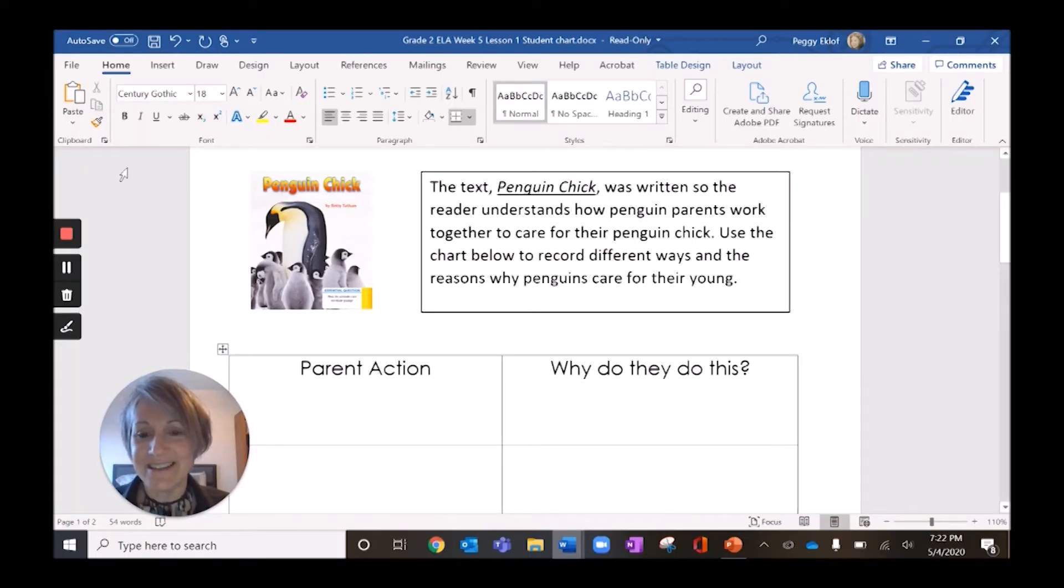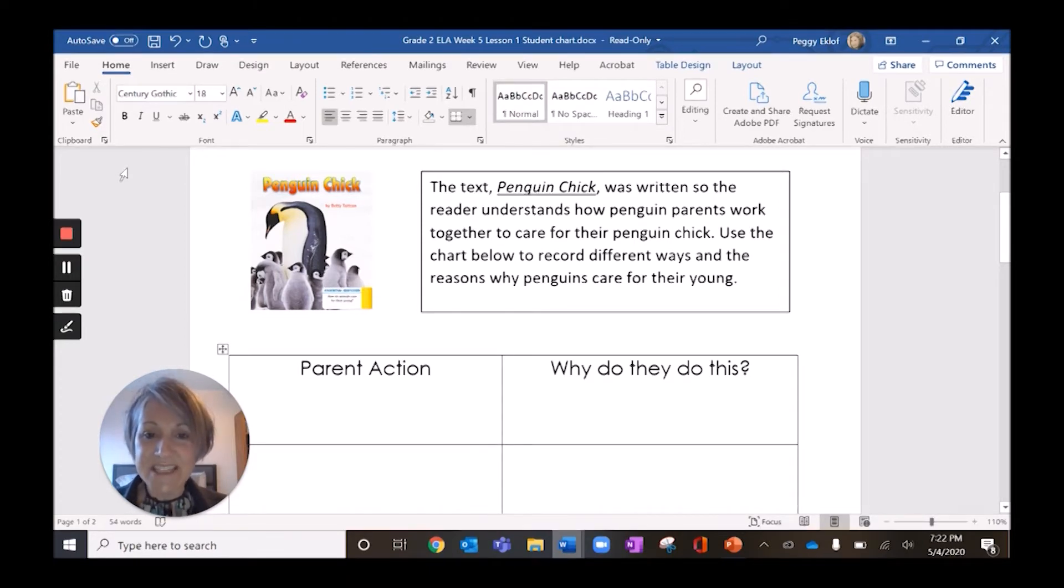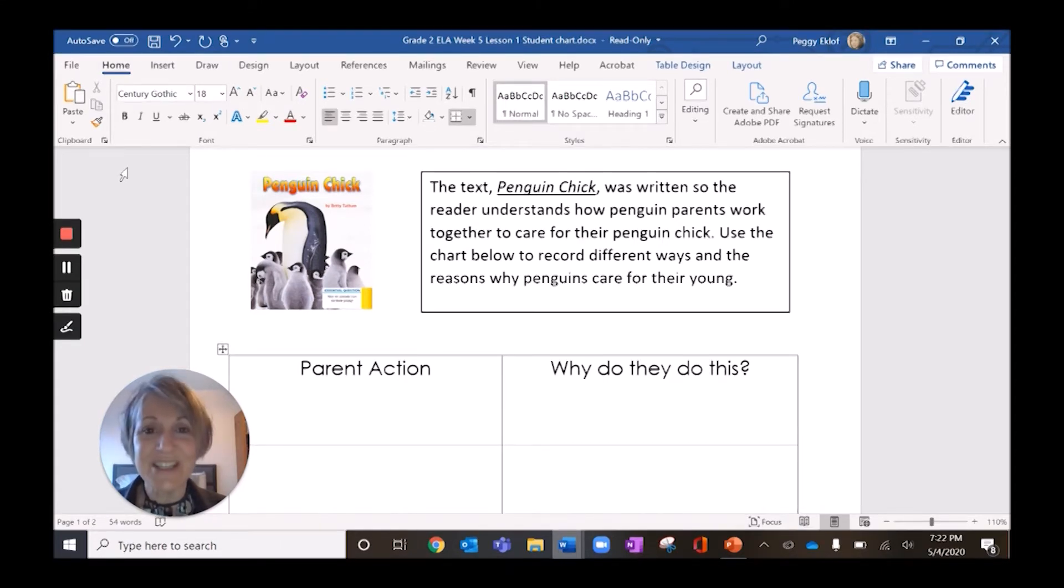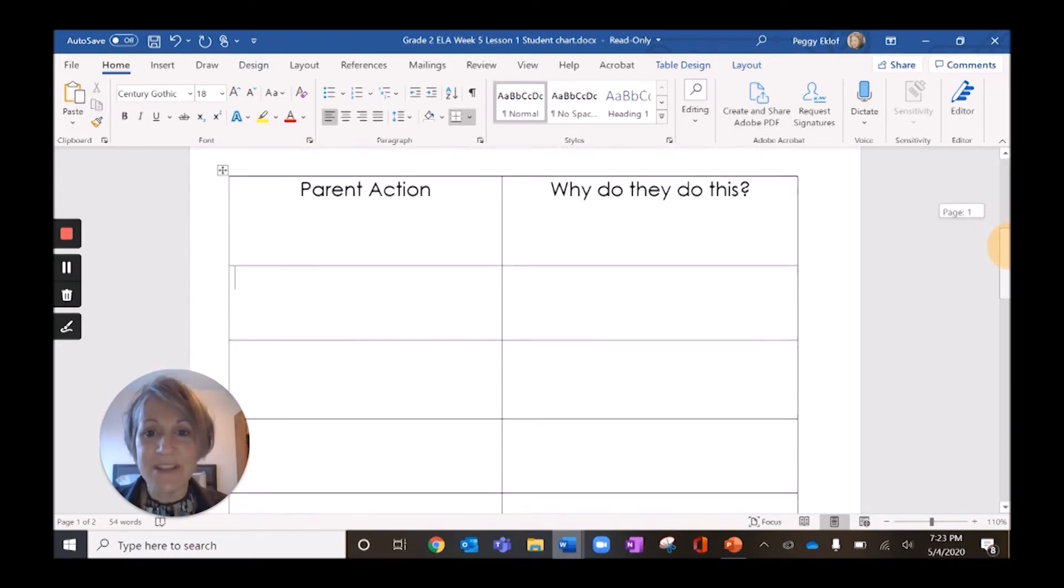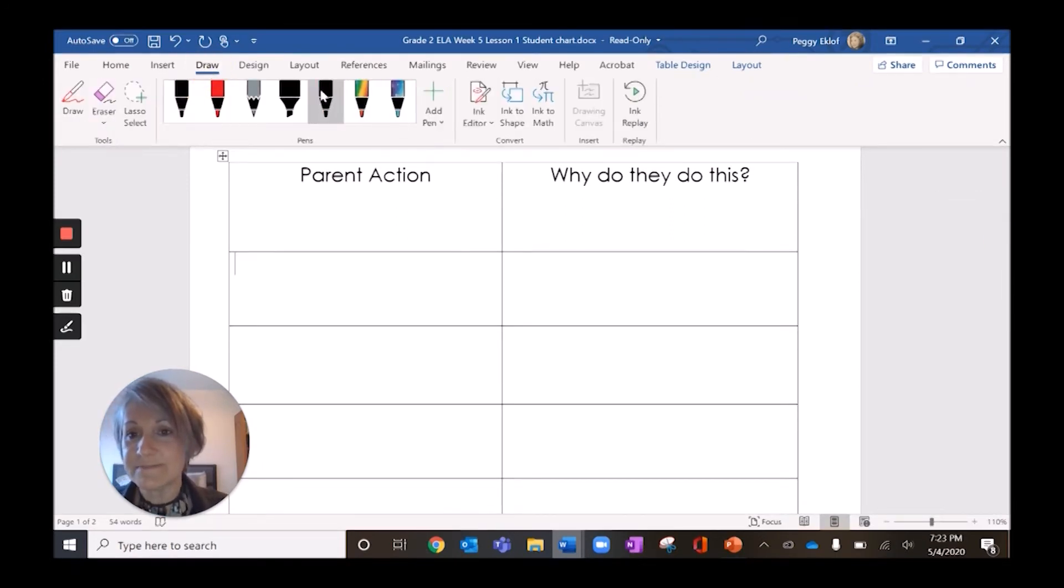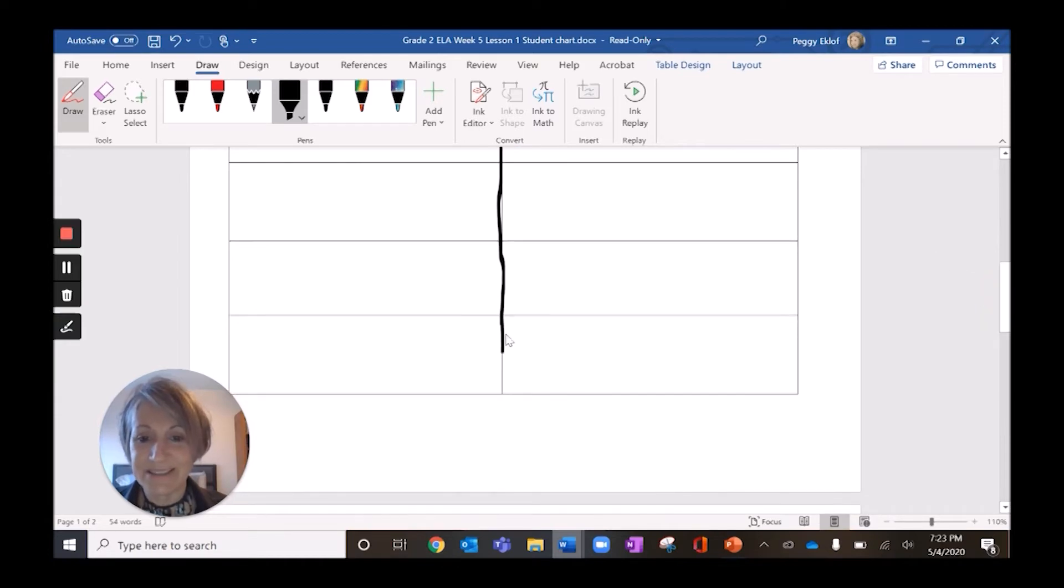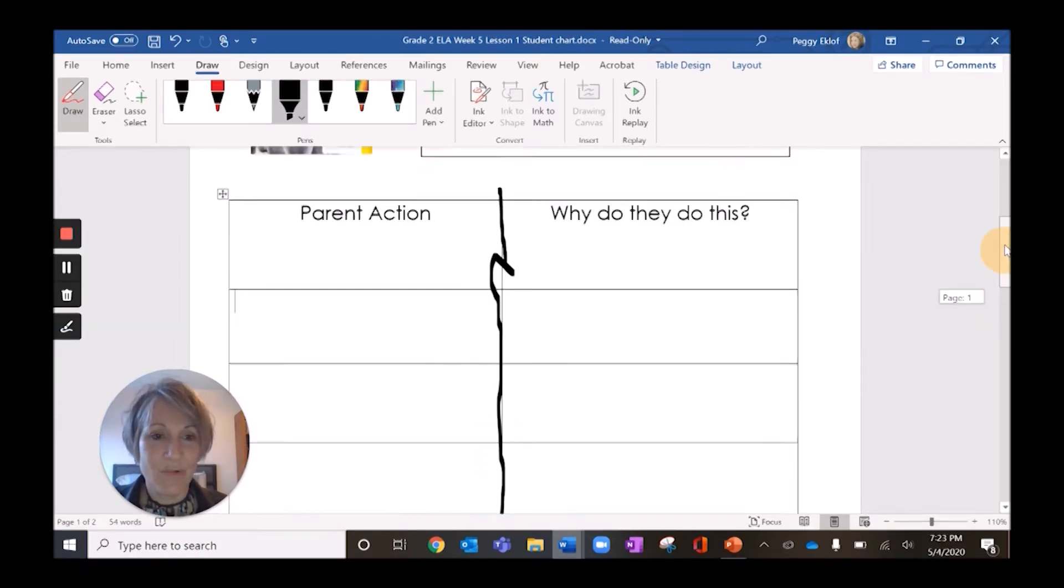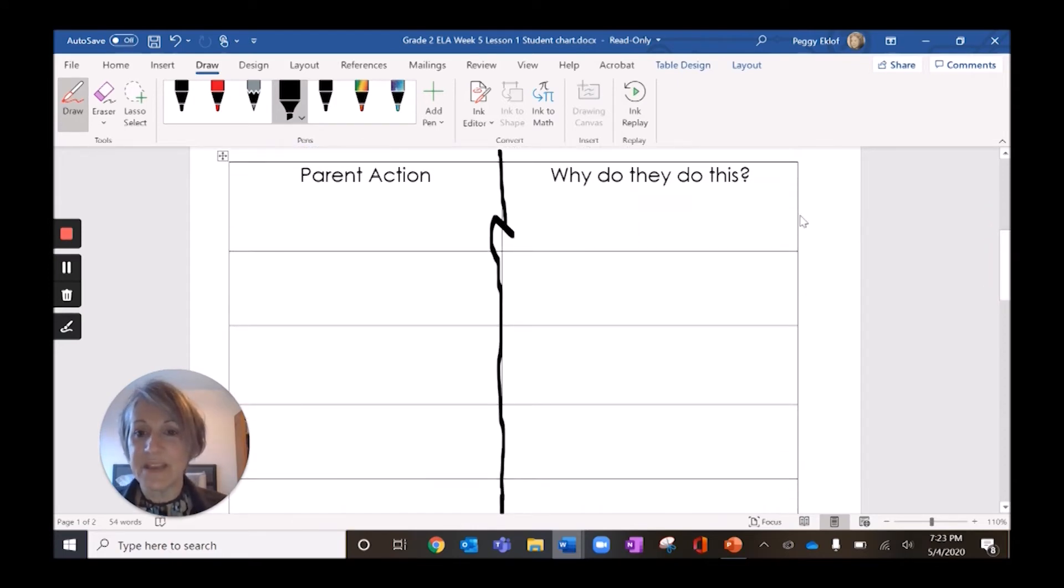So let's go to our graphic organizer and start recording there now. Let's look at our graphic organizer. Let's read this part at the top together. The text penguin chick was written so the reader understands how penguin parents work together to care for their penguin chick. Use the chart below to record different ways and the reasons why penguins care for their young. Now remember, you don't need this fancy sheet of paper. Just get out a piece of paper now and I'll show you how you can draw a one vertical line down the middle to create your graphic organizer. So go ahead and get out your sheet of paper and something that you're going to write with. And I'm going to get out my draw tool. And I'm just going to draw one vertical line. It's a little harder to draw with this draw tool. All the way down my paper.